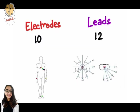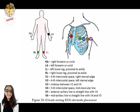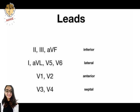In the 12-lead ECG system, there are 10 electrodes and 12 leads. You can now pause the video and memorize the location of the different leads.